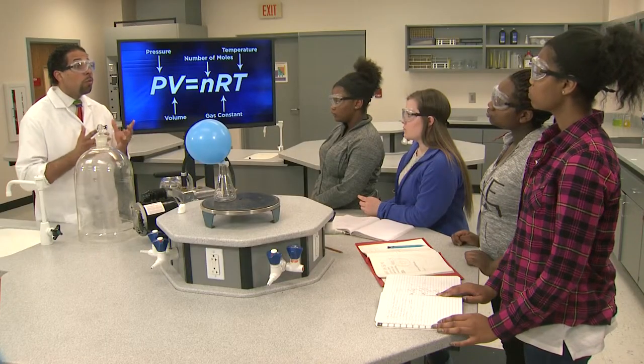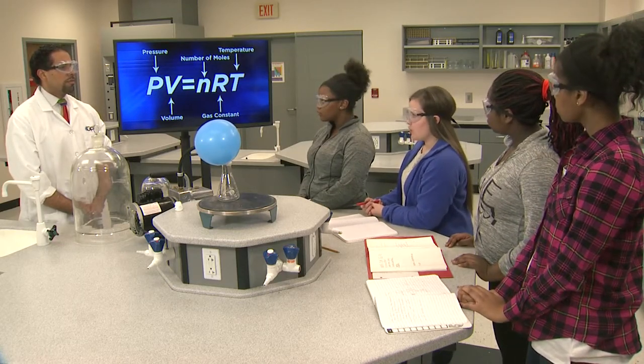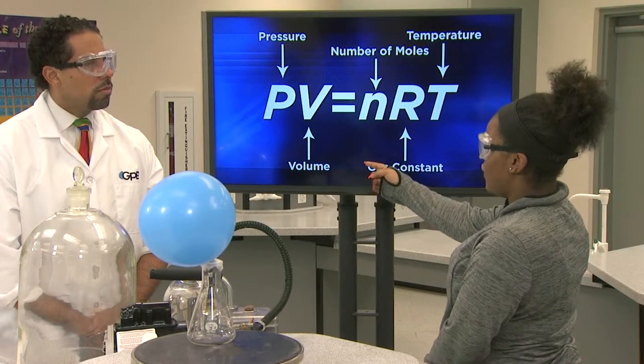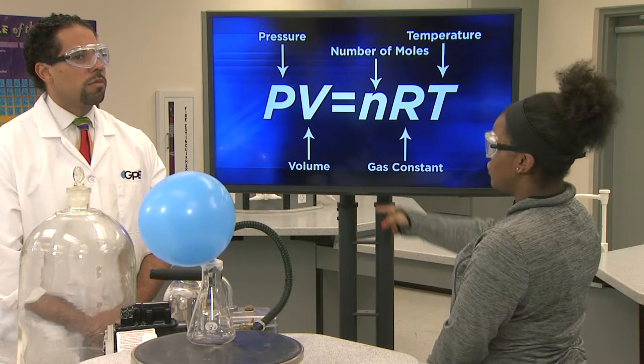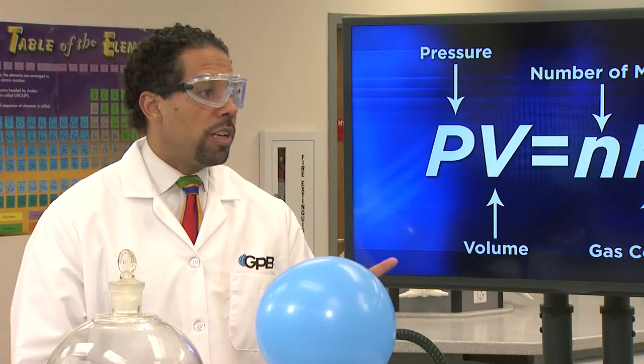A vacuum reduces pressure. So if pressure goes down, the volume will go down too? Another student thinks the opposite: when pressure goes down, volume has to go up. The ideal gas law shows that pressure and volume are inversely proportional to each other — if pressure goes down, volume has to go up. Let's watch the demonstration and observe what happens.